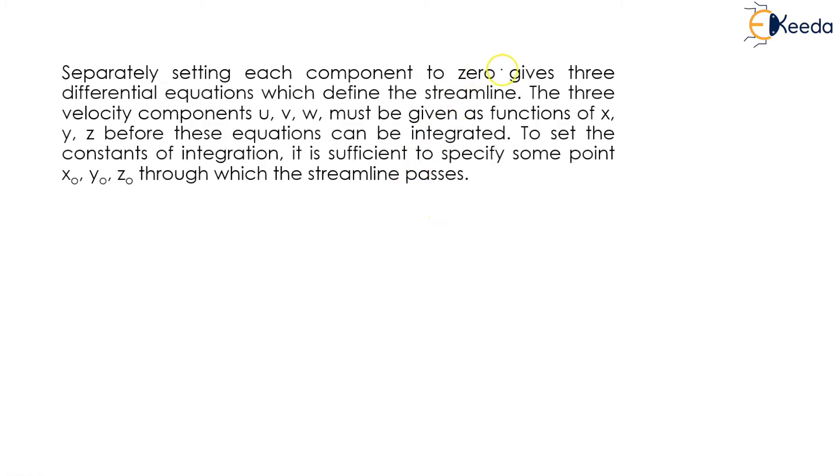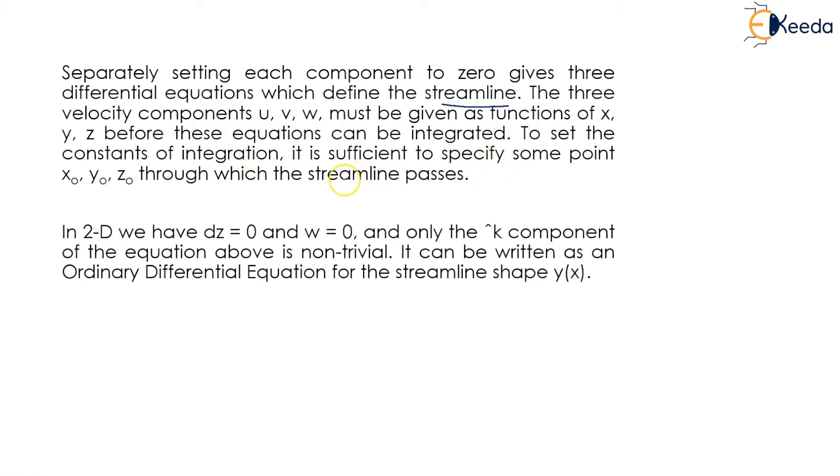Separately setting each component to zero gives us three differential equations which define the streamline. The three velocity components u, v, and w must be given as functions of x, y, and z before these equations can be integrated. To set the constant of integration, it is sufficient to specify some point x naught, y naught, and z naught through which the streamline will pass.